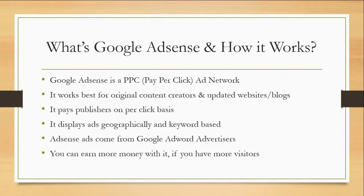Advertisers target both geographically and keyword-based. So if a person is searching from Dubai about something, they will see different ads, whereas a person searching from India will see different ads. These are the simple points about how Google AdSense works — it is a pay-per-click network mainly based on geographical location and keywords.